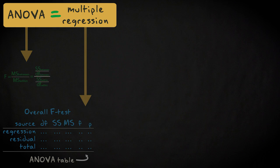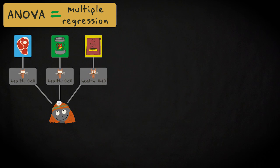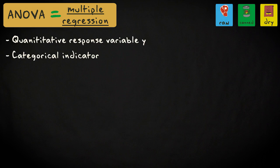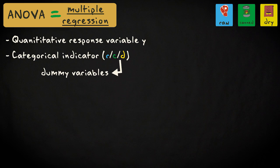To illustrate this, we'll perform a one-way analysis of variance using multiple regression. Let's consider our one-way example, where we compare healthiness of three groups of cats that consume different diets: raw meat, canned food, and dry food. A vet rated cat health on a scale from 0 to 10. We have a quantitative response variable and a categorical independent variable, or indicator. The indicator has three levels, and only binary indicators are allowed in regression, so we need to create two dummy variables to identify these levels.